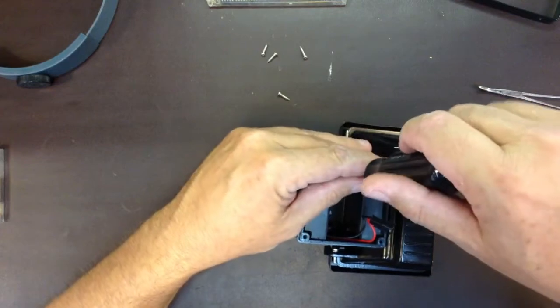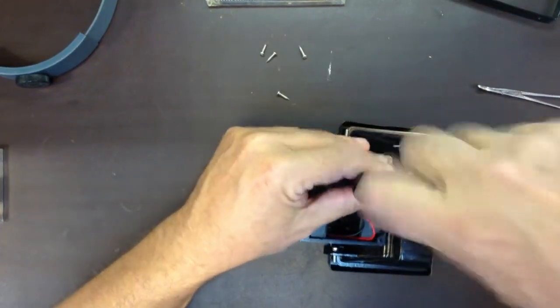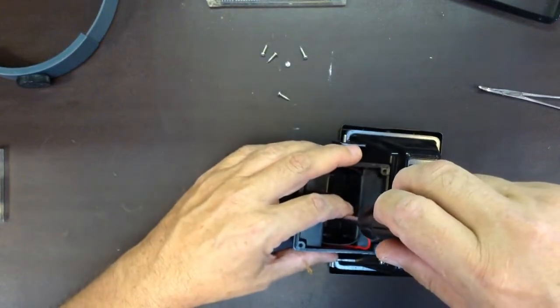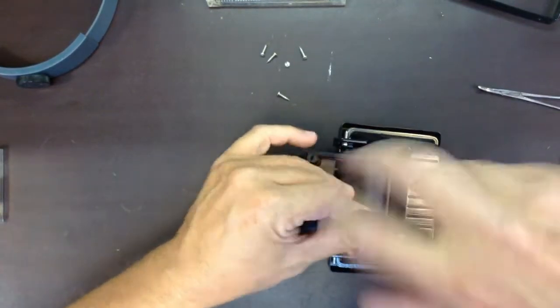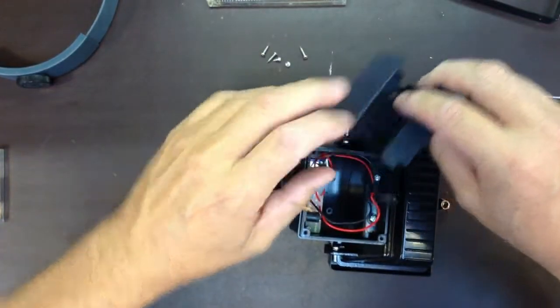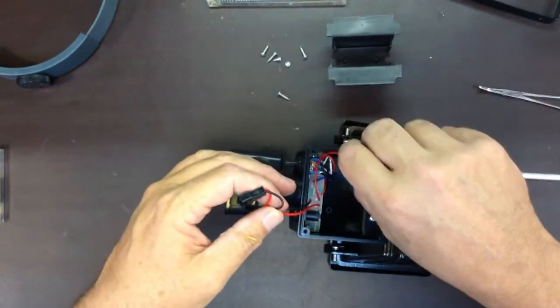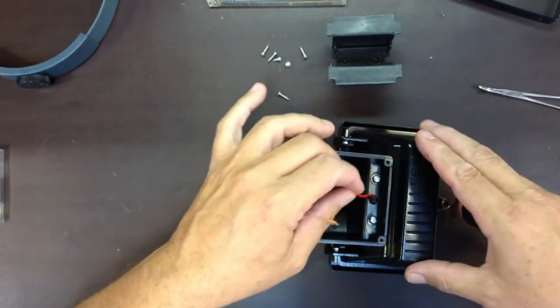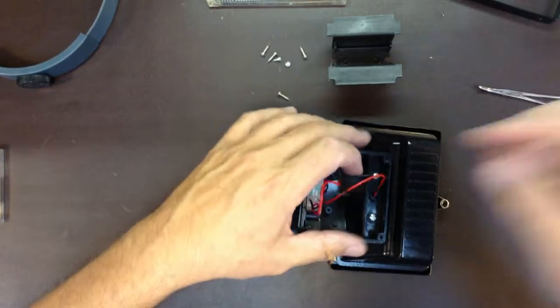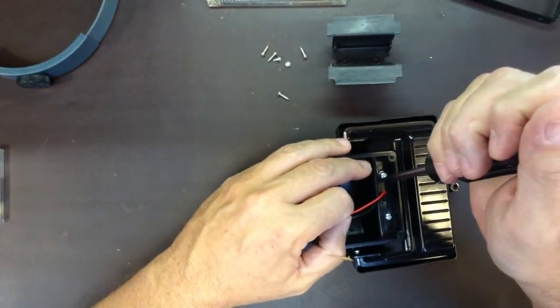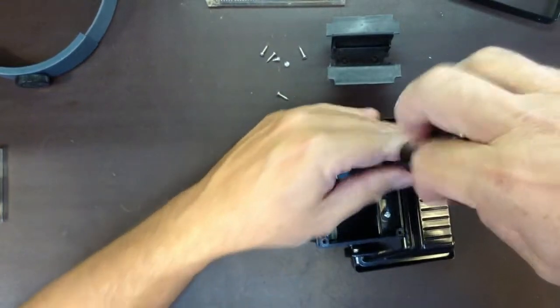In here. A couple more screws. A tiny little circuit board. These two wires apparently go to all the LEDs. Looks like we can detach that.